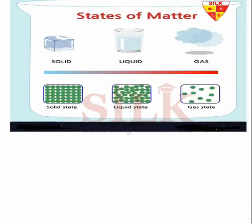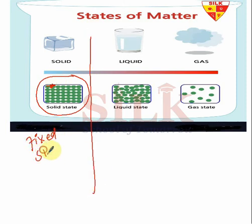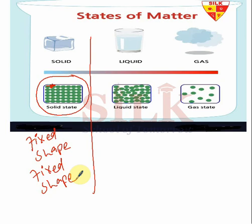Let's look at these three states. If you look at number one, solid, you will see the molecules tightly packed with very small spaces between them. This is why solid has a fixed shape. Now if you look at liquid, what do you see? What is the shape of the inter-molecular forces in liquid?